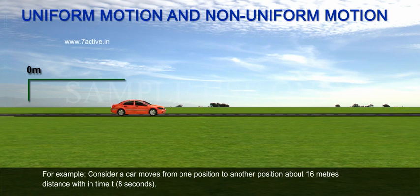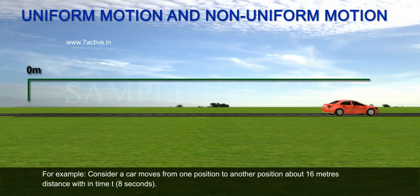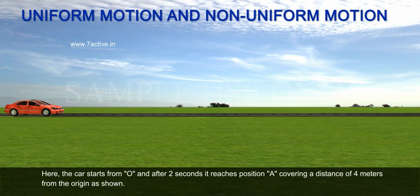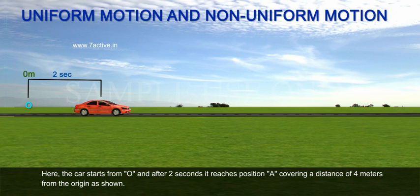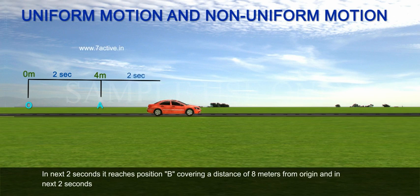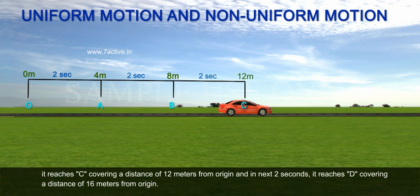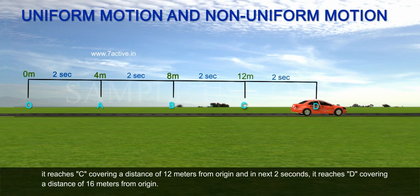For example, consider a car moves from one position to another position about 16 meters distance within time t = 8 seconds. The car starts from O and after 2 seconds it reaches position A covering a distance of 4 meters from the origin. In the next 2 seconds it reaches position B covering a distance of 8 meters from origin, and in the next 2 seconds it reaches C covering a distance of 12 meters from origin, and in the next 2 seconds it reaches D covering a distance of 16 meters from origin.